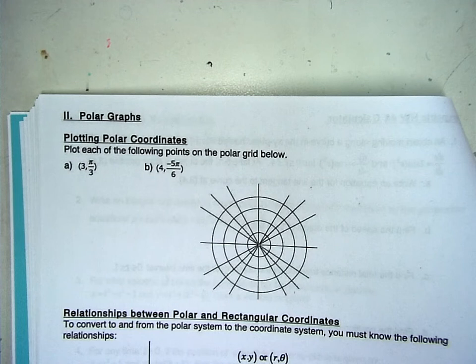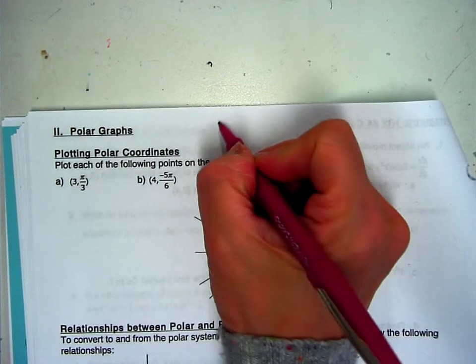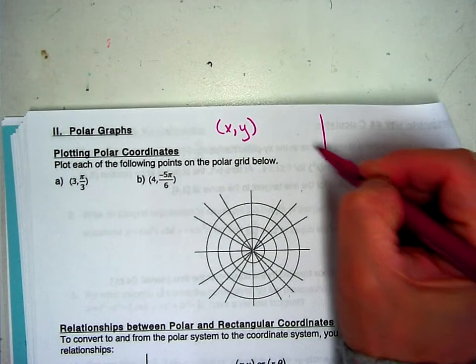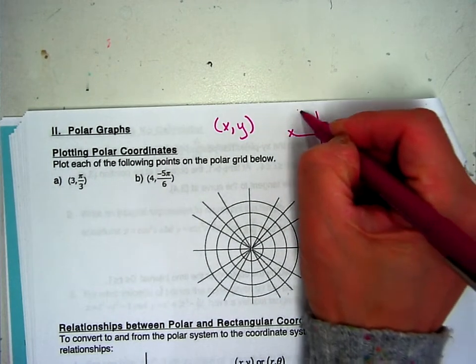So previously when we were working in function form, when I gave you an ordered pair that would be an x and a y and we would go ahead and graph it on x, y coordinate plane.